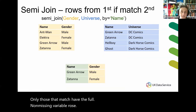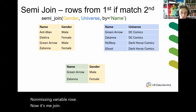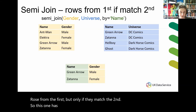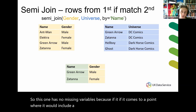A semi join returns rows from the first but only if they match the second. This one has no missing variables, because if it comes to a point where it would include a missing variable, it drops the row instead.